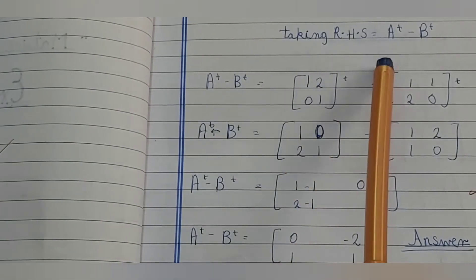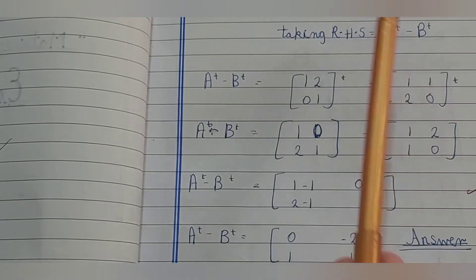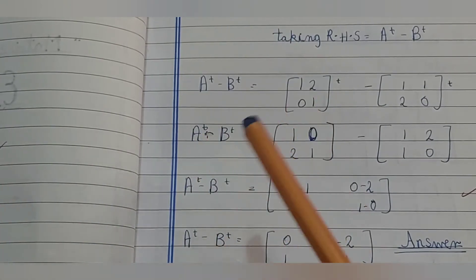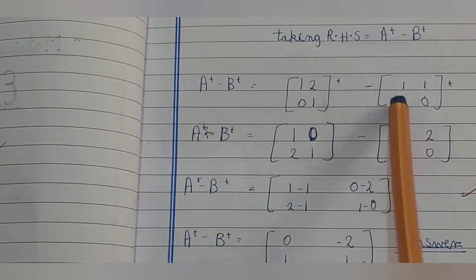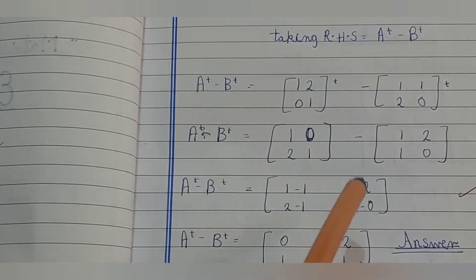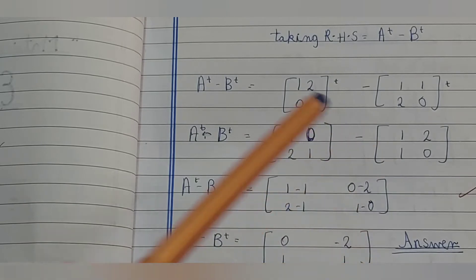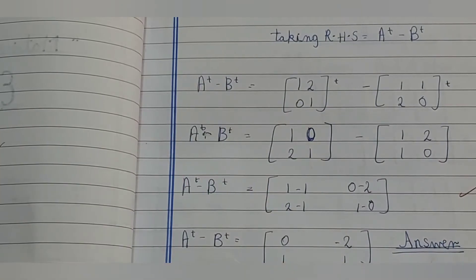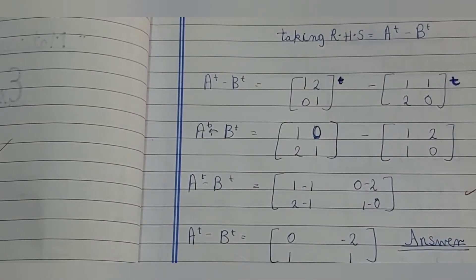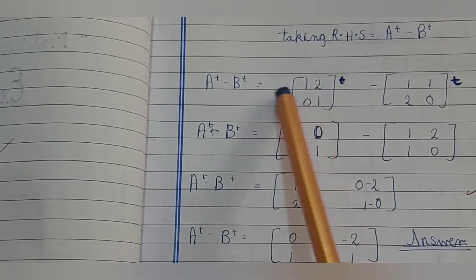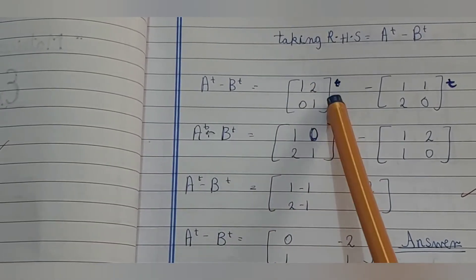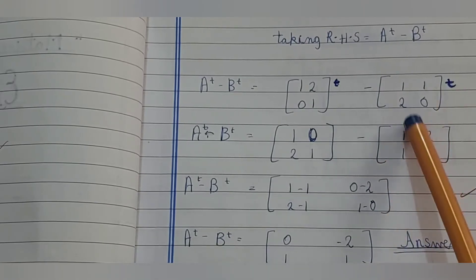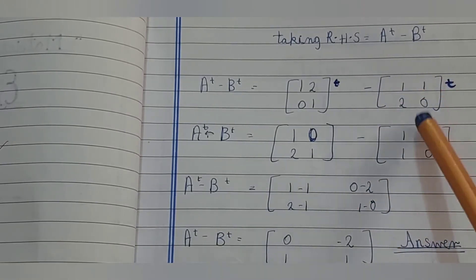Now taking right-hand side: A transpose minus B transpose. Matrix A=[1,2;0,1] with transpose and B=[1,1;2,0] with transpose. First, A^T = [1,0;2,1]. Then B^T = [1,2;1,0]. Now we subtract: A^T − B^T = [1−1, 0−2; 2−1, 1−0] = [0,−2;1,1].